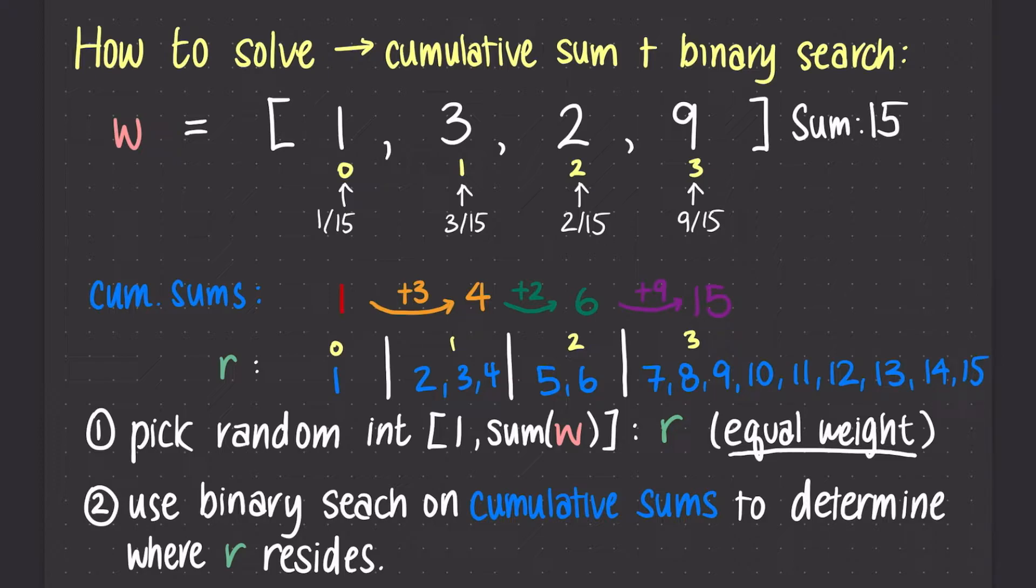Now if r were 1, then it would fall in index 0's cumulative range. It happens to be that since there is only 1 value possible, that is a 1 out of 15 chance of occurring. If r happened to be either 2, 3, or 4, that would fall into index 1's cumulative range, giving us a 3 out of 15 chance of occurring.